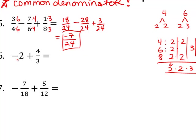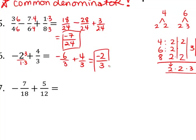Next we've got negative 2 — remember, you can write it over 1. The common denominator for 1 and 3 is 3, because 1 can be turned into a 3 by multiplying by 3. That gives us negative 6 over 3 plus 4 over 3. Combine the numerators: negative 6 plus 4 is negative 2 over 3. No common factors, so we can leave it.